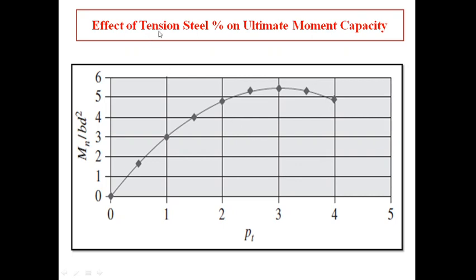This graph shows the effect of tension steel percentage on ultimate moment capacity. On the X-axis is the tensile steel percentage and on the Y-axis is Mn/(Bd²), the ultimate moment capacity. This graph is approximately linear up to a certain level, so we can say approximately that as the steel percentage is doubled, the ultimate moment capacity is also approximately doubled.